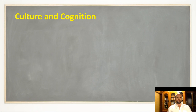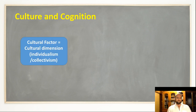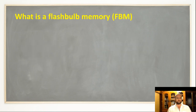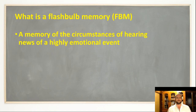The example I'm going to explain is individualism and collectivism, and we're looking at how that affects flashbulb memory formation. Before we begin, we have to look at what a flashbulb memory is. This is the memory of the circumstances when you hear news of a highly emotional event — so it's not the memory of the event itself, but the circumstances around when you heard news of that event.